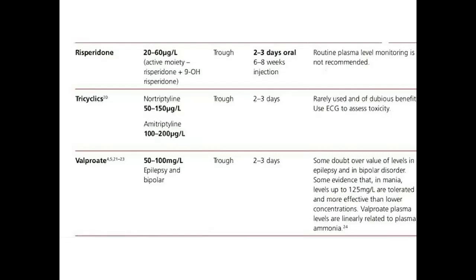Tricyclics: nortriptyline target range is 50–115 mg per liter; amitriptyline target range is 100–200 mg per liter. Sampling time is trough; time to reach steady state is 2–3 days.